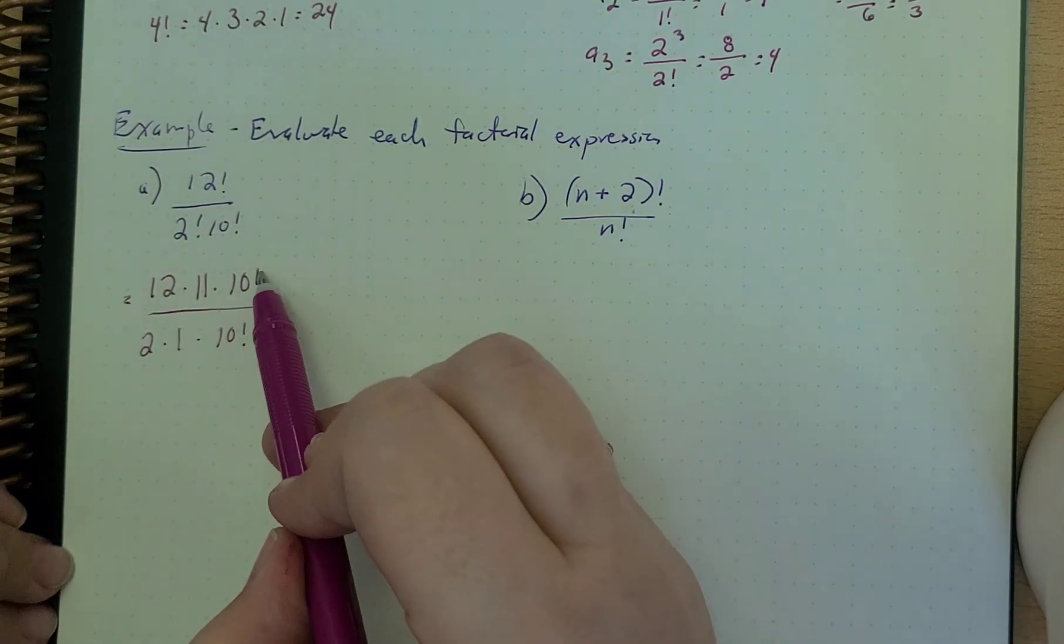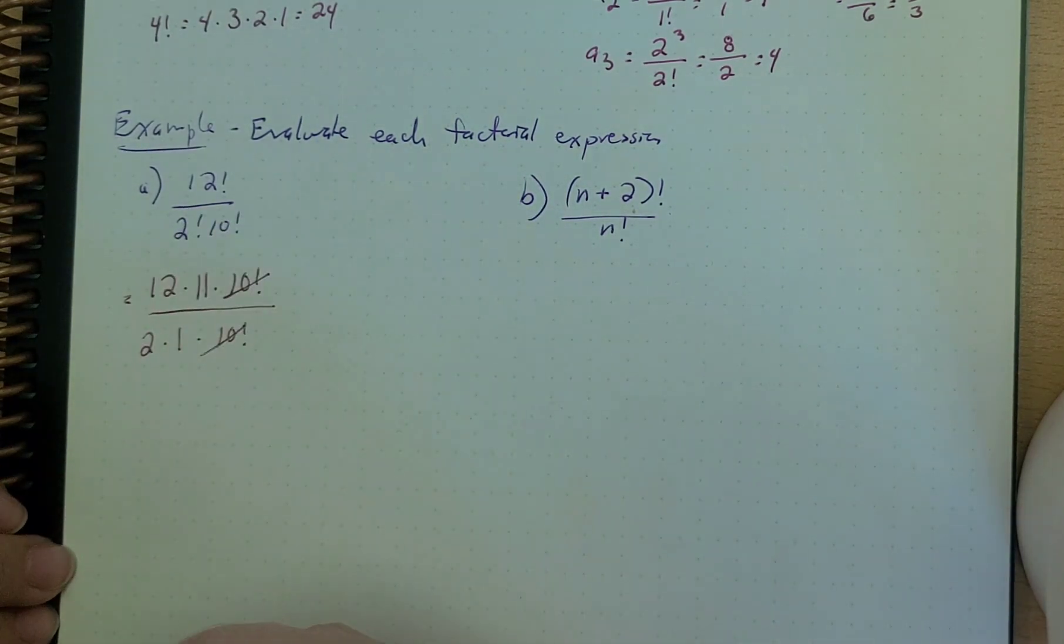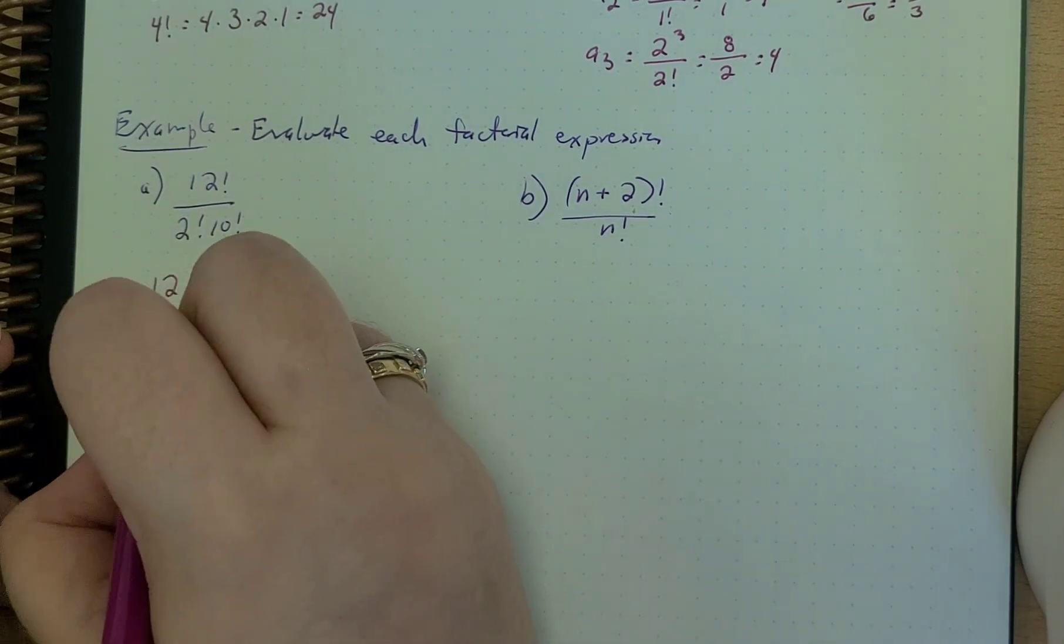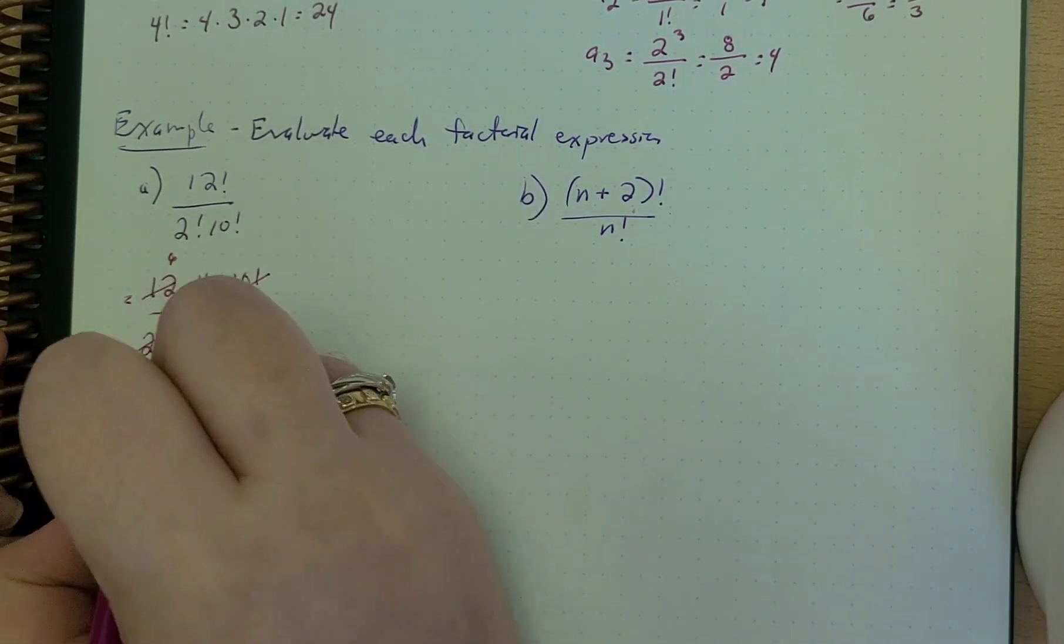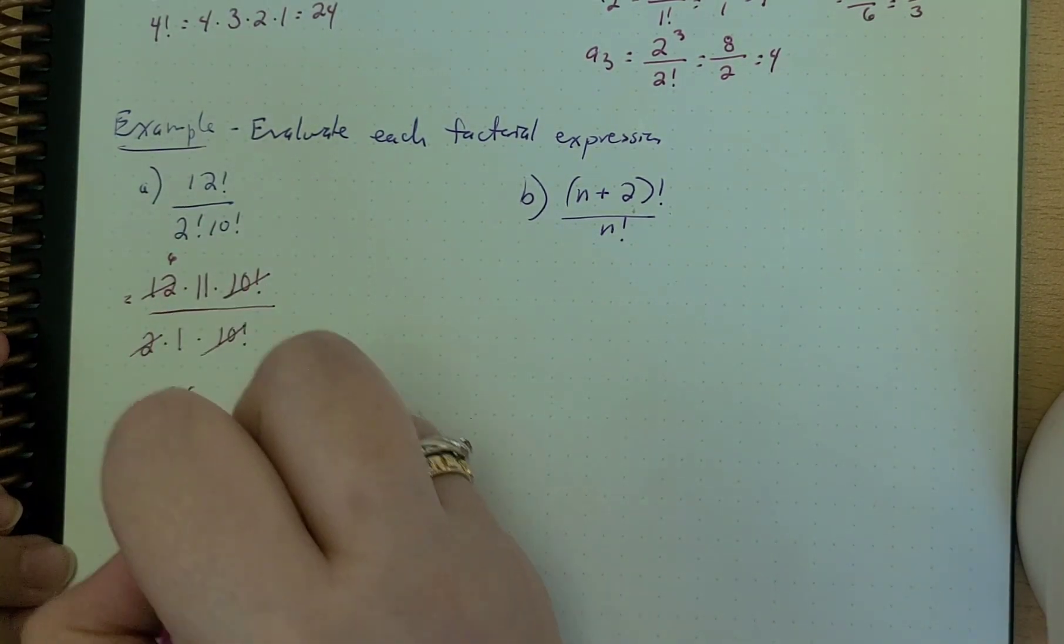So now you can see that we have 10 factorial and 10 factorial. These cancel out, and we're left with this. 2 goes into 12 six times, so this just becomes 66, right?